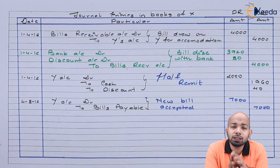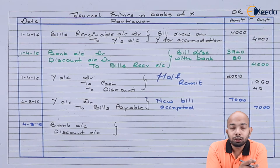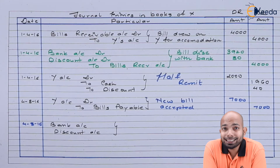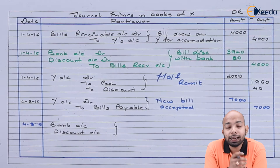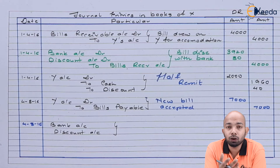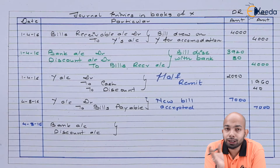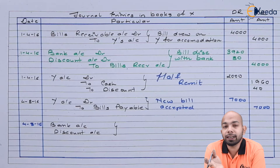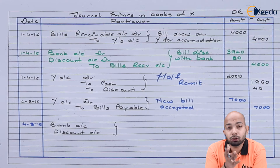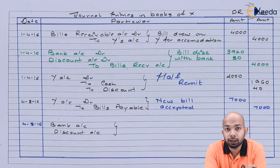So ideally, the total discount is Rs 400 out of which Rs 200 has been borne by Y and Rs 200 will be borne by us. The cash sent was Rs 1,300, and the additional Rs 200 discount is something we have to bear. So the total amount to be credited to Y's account is Rs 1,500.